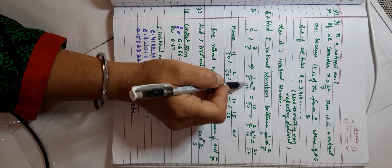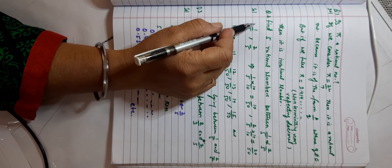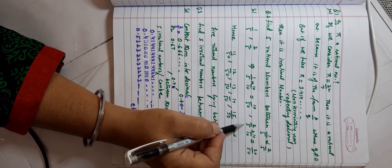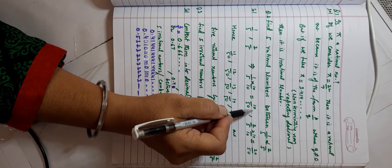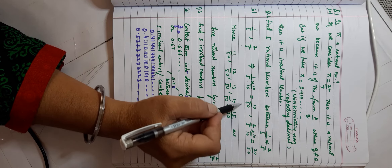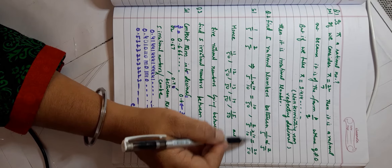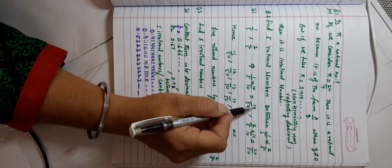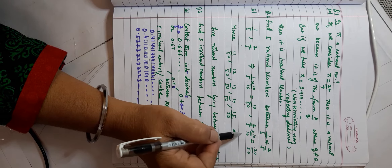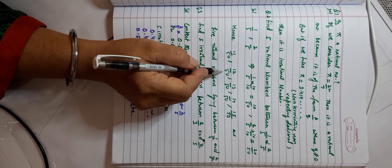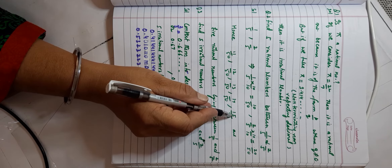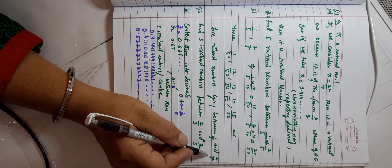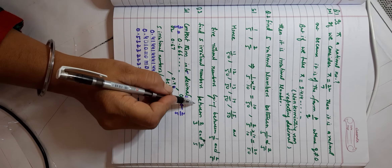Find five rational numbers between 1/5 and 2/5. Both fractions should have the same denominator with a proper gap between numerators. Multiply both by 10/10: 1/5 becomes 10/50 and 2/5 becomes 20/50. Now I can choose any five numbers between them: 11/50, 12/50, 13/50, 14/50, and 15/50. These are the five rational numbers lying between 1/5 and 2/5.